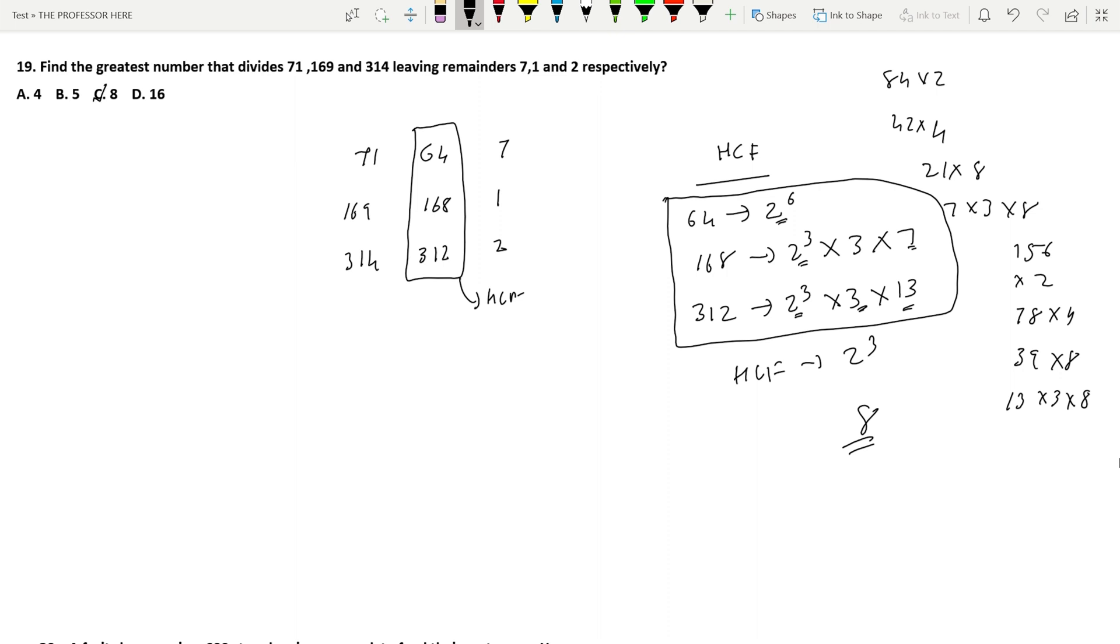Let me explain it again. When you divide 71 by 8, you go up to 64 and leave a remainder of 7. 169 divided by 8, you go up to 168 and leave remainder 1. 314 divided by 8, you go up to 312 and leave remainder 2. Whenever you get such a question, find these numbers so you can find the HCF and finally the answer. I hope you understood how to solve LCM and HCF questions.